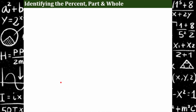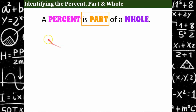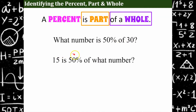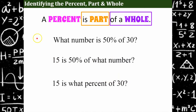So let's identify the percent, the part, and the whole. Remembering that a percent is part of a whole, you're going to be given three different kinds of questions. Here's one: What number is 50% of 30? Second: 15 is 50% of what number? And third: 15 is what percent of 30? Each of these is asking the same mathematical thing. However, either the percent is missing from one, the part is missing from another, and the whole is missing from the other.